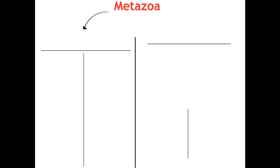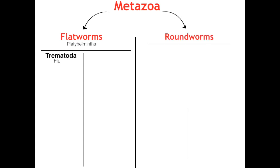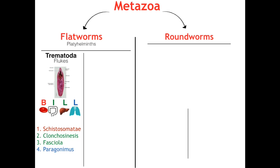Next up are our metazoans. Moving from left to right, starting off with our flatworms, a.k.a. platyhelminths. For trematoda — also called flukes — remember the mnemonic BILL: B-I-L-L, which stands for blood, intestine, liver, and lung. Four letters, four systems. There are four flukes that we need to know following the same systemic order: first is schistosoma, second is clonorchis sinensis and fasciola, and fourth is the lung fluke, Paragonimus westermani. All four of them actually hit all four systems in different capacities, which I'll get into when I go over the flukes. The colors are just their primary site of pathogenesis.